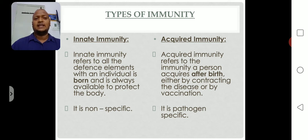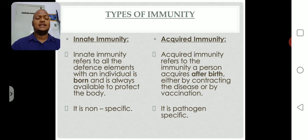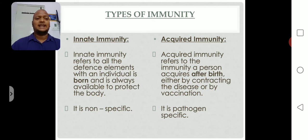Acquired immunity also develops through vaccination. Vaccines do not consist of medicines — vaccines consist of weak antigens, weak foreign substances only. When induced into the human body through vaccination, our immune system memorizes those particular antigens. So when the same antigen enters a second time, the immune response is immediately generated.